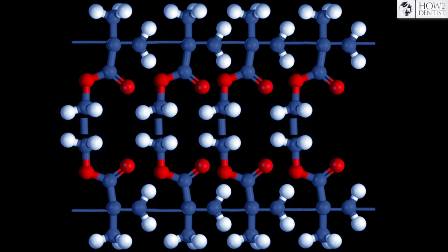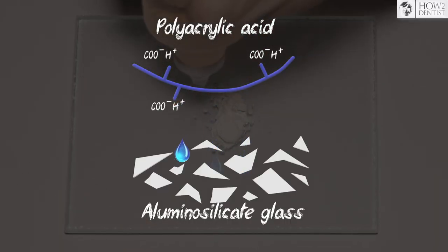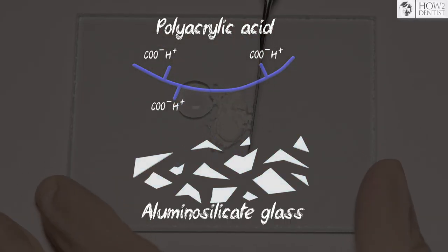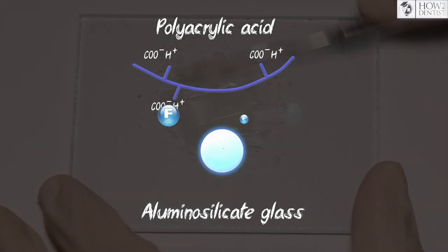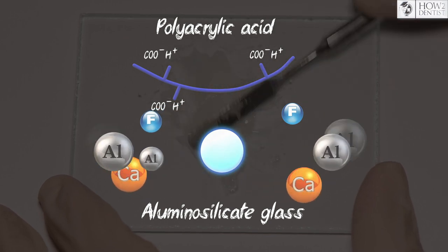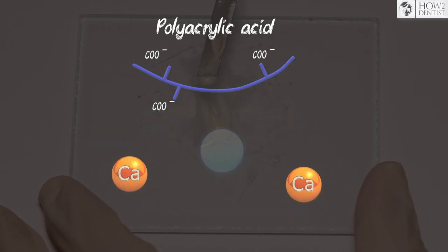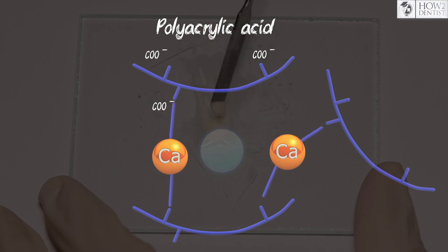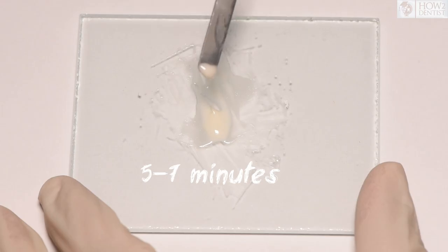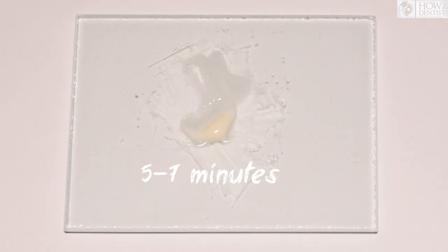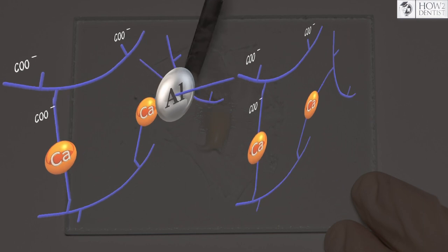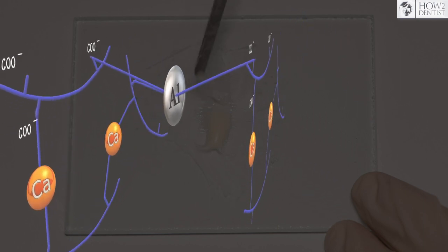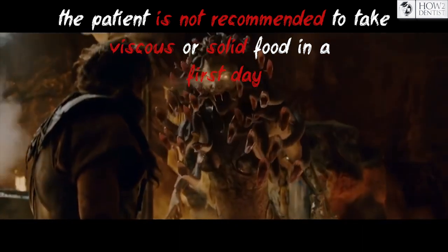For details about polymerization and cross-linking, watch one of the previous videos. In the acid-base reaction of GIC, the acid does not polymerize, but dissolves the powder particles of aluminum silicate glass and causes the release of fluoride ions — which do not affect the reaction — as well as calcium and aluminum from its surface. Calcium cross-links polyacrylic acid at the beginning of the reaction, giving the cement a working fluid consistency. In 5–7 minutes after mixing, aluminum joins the cross-linking. It has three links, unlike calcium which has two, making the cross-linking stronger and the consistency harder. Aluminum cross-links slowly; therefore, sufficient strength of GIC is achieved at least 24 hours after fixation.